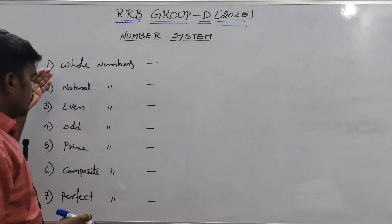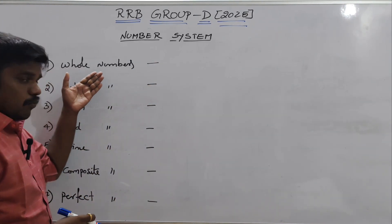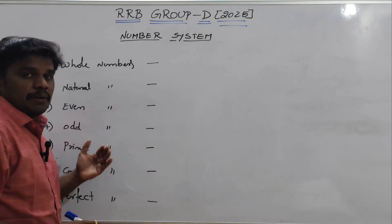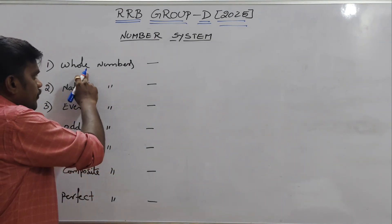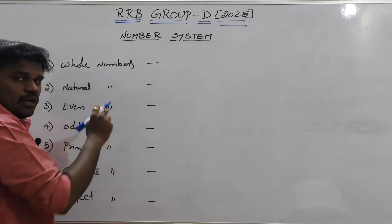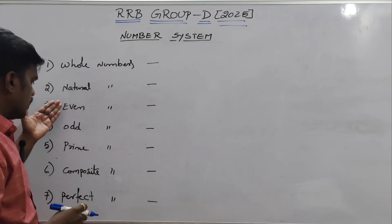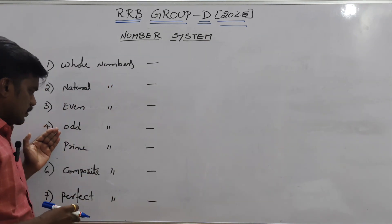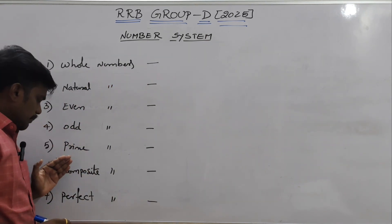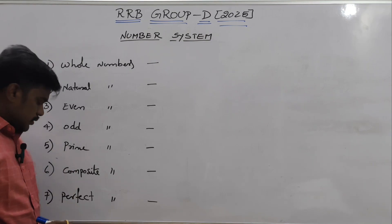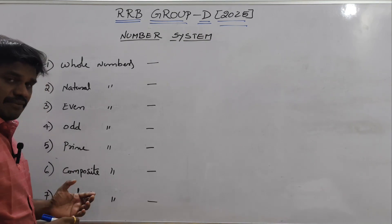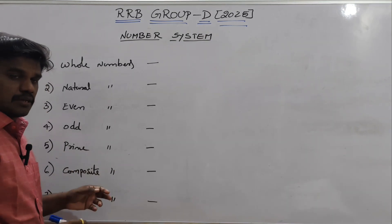First of all, what are the types of numbers? The first one is whole numbers, natural numbers, even numbers, odd numbers, prime numbers, composite numbers, and perfect numbers. So total 7 types of numbers are there.